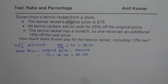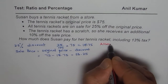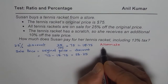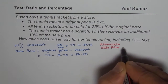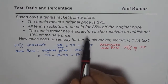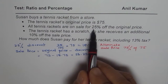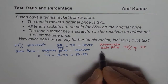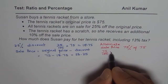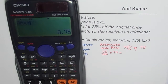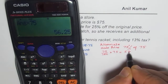I'll also show you an alternate method of finding this value. Since there is a 25% discount on $75, how much do you pay? You pay 75%, right? So we could write the sale price as 75% of $75. The original price has a 25% discount, meaning you do not pay 25% but pay 100 minus 25, which is 75%. So that equals 75/100, or 0.75 times 75. Calculating: 75 divided by 100 times 75 equals exactly $56.25.